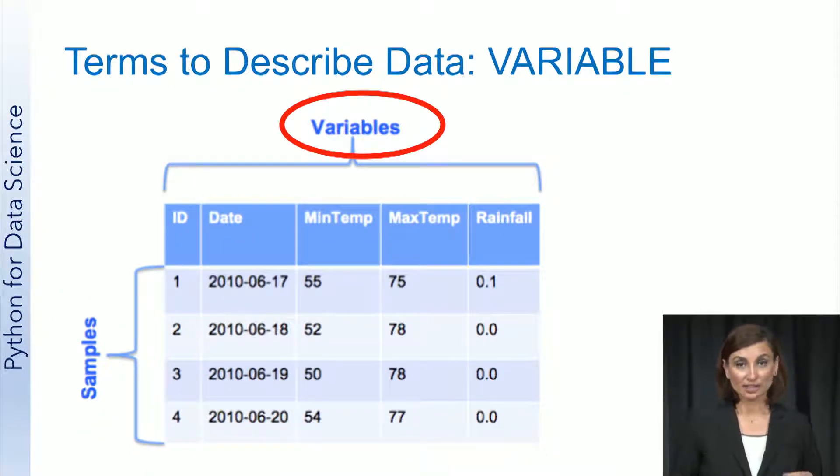In this table, each sample has five values associated to it. These values are different information pieces about that sample, like the sample date, minimum temperature, maximum temperature, and rainfall on that date. We call these different values variables of the sample, and sometimes refer to them as features of the sample.